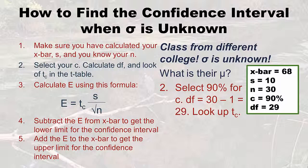Now we need to decide on C. I just picked 90%. We also need to calculate our degrees of freedom — that's n minus 1, which is 29. That's probably the easiest thing you'll learn in this class. At least something's easy! Now we're going to do something kind of hard: look up T sub C in the T table. Before we go to the table, remember we've selected 90% for the confidence level and our degrees of freedom are 29 — those are the ingredients we need.